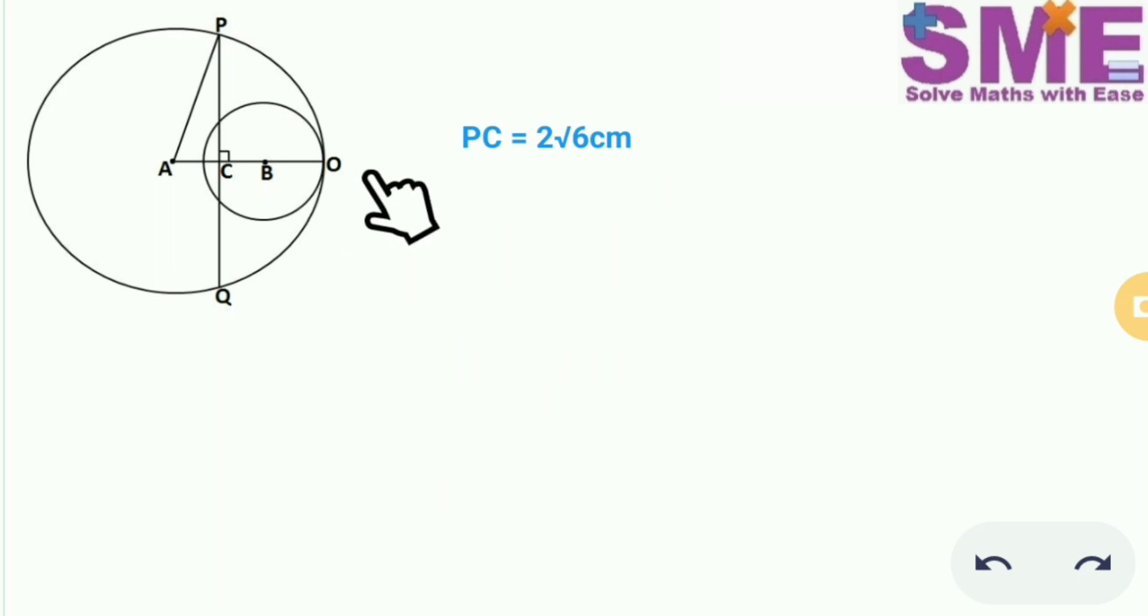So now we have the value of PC as 2√6 cm and we need to find the length of chord PQ.